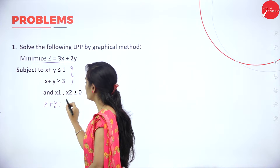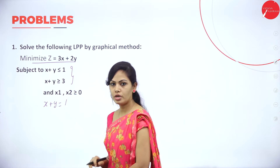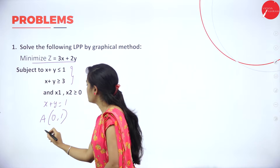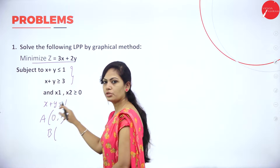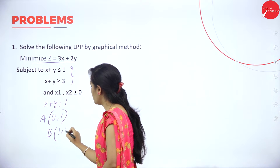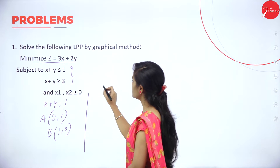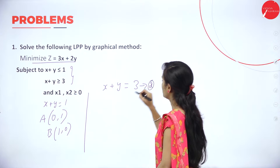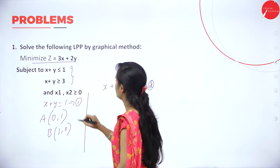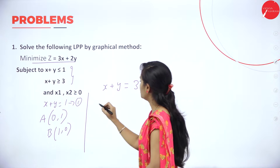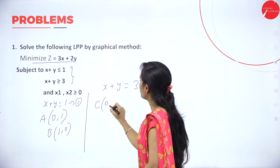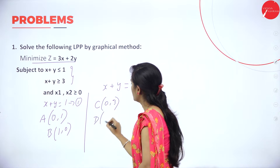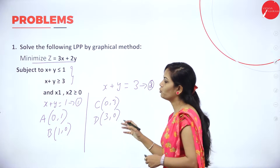X plus Y equals 1. Put X equal to 0 and Y equals 1, so point A is (0, 1). Put Y equal to 0, X equals 1, so point B is (1, 0). For the second constraint, put X equal to 0, Y equals 3, so point C is (0, 3). Put Y equal to 0, X equals 3, so point D is (3, 0). We have two constraints here.